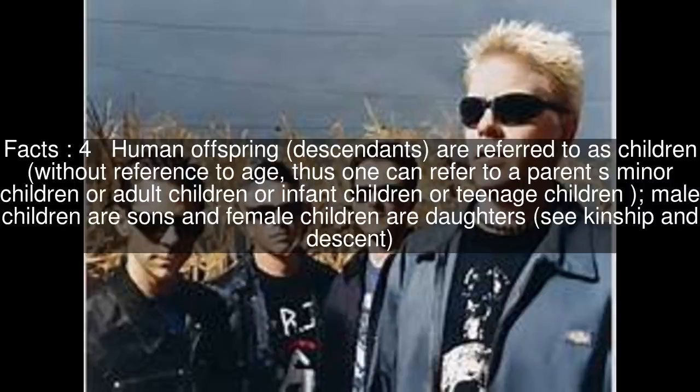Human offspring, or descendants, are referred to as children, without reference to age. Thus one can refer to a parent's minor children, adult children, infant children, or teenage children. Male children are sons and female children are daughters. See kinship and descent.